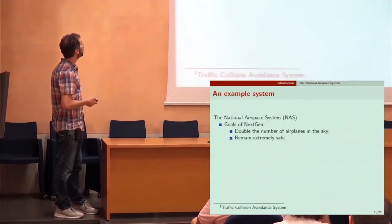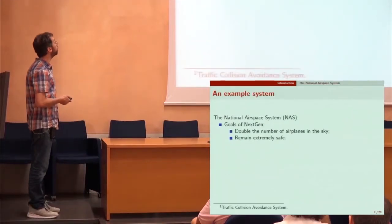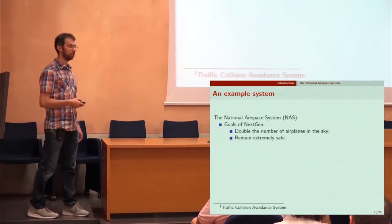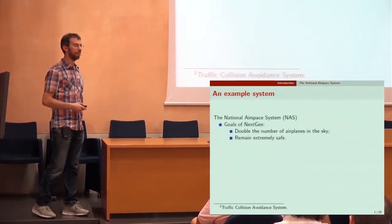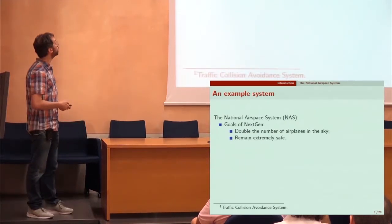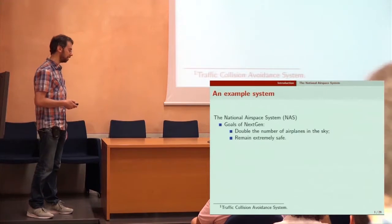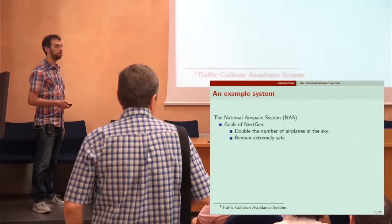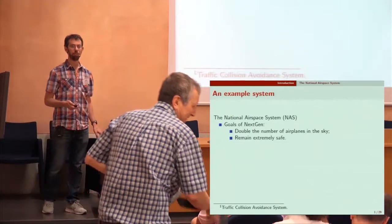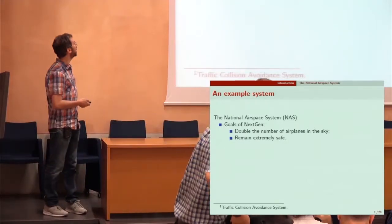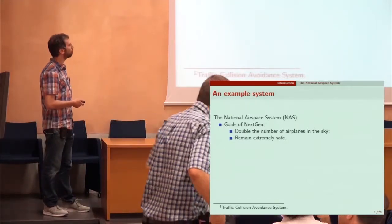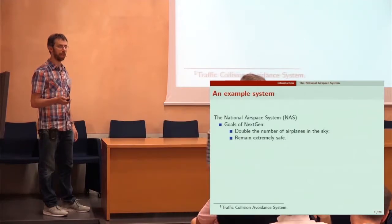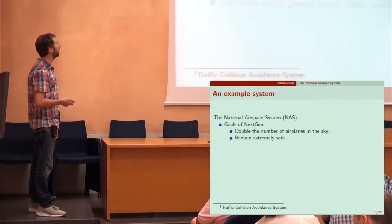We did a project with NASA. The US has something called the national airspace where all the airplanes are, and the goals of NextGen — which is a NASA program — are they want to double the number of airplanes in the sky but remain extremely safe. Right now they have a problem about one in every billion hours of flight time, and they want to keep that billion.